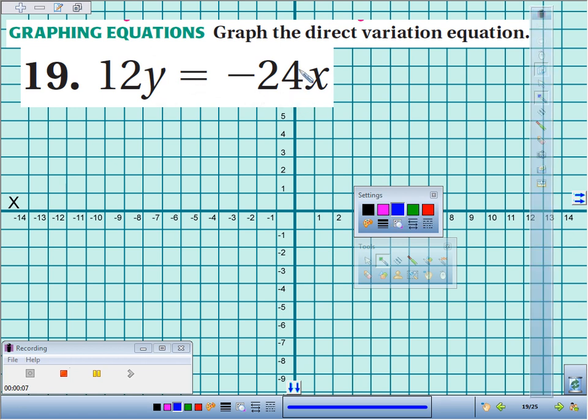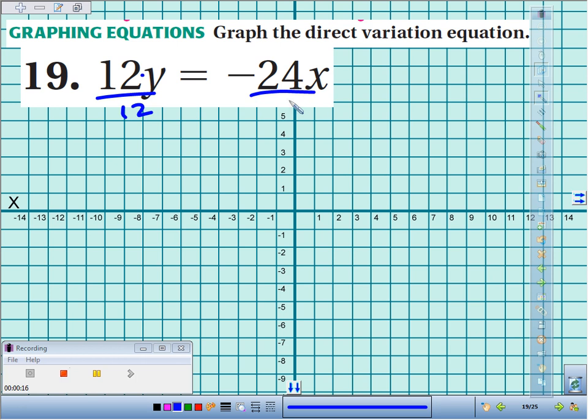The numbers look a little daunting here, but remember, in order to graph a direct variation equation, it's useful to always solve for y first. So cancel out the times 12, we'll divide by 12 on both sides, and we end up getting y equals negative 2x. It's a lot more manageable.